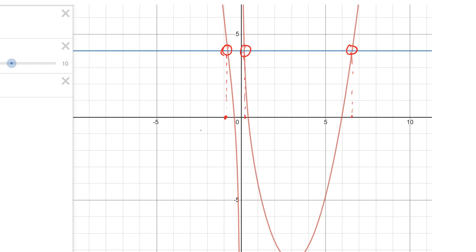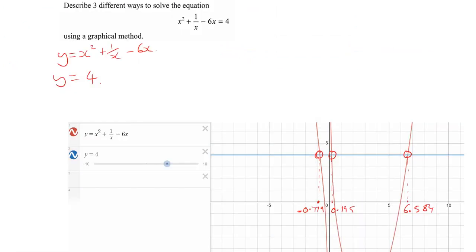Now, I've done that already. I can tell you the x-coordinates. They're minus 0.779 and you can try and check these yourself on your calculator, 0.195 and this one over here is 6.584. So that is one way we could certainly solve this.